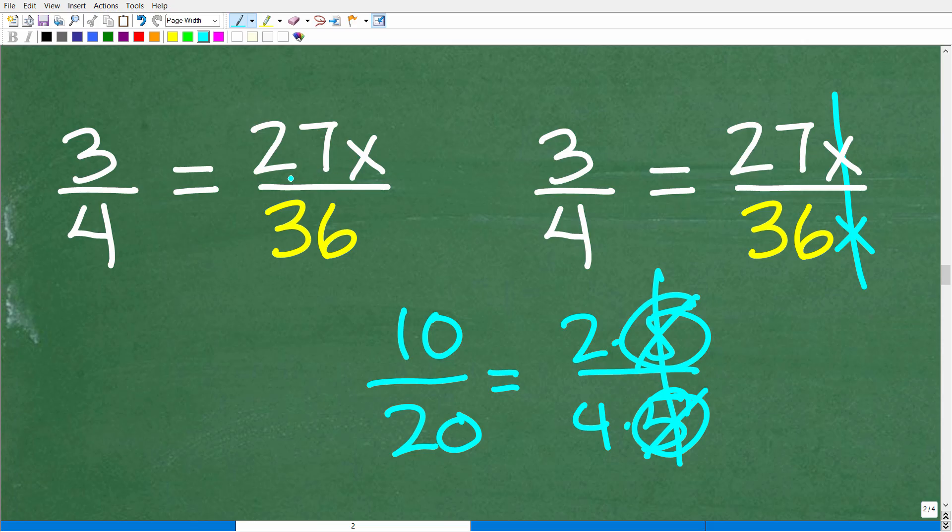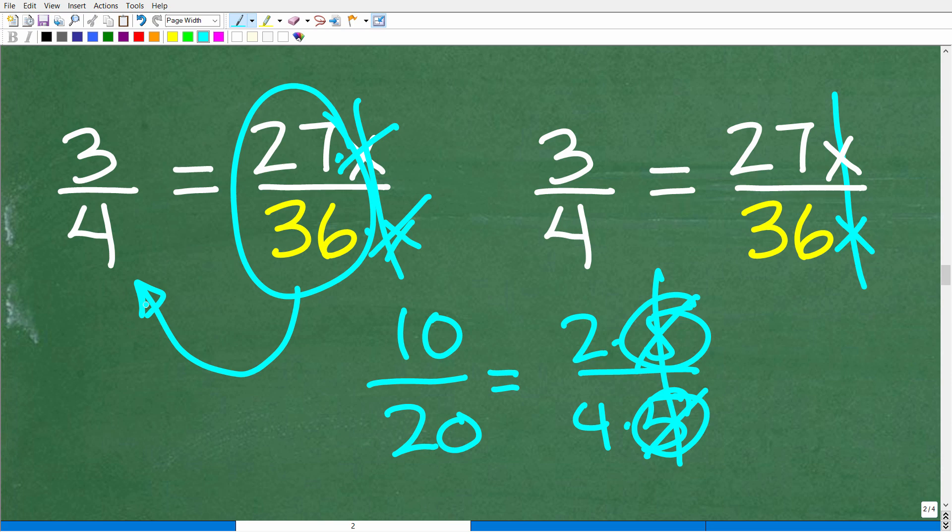Same thing here. This is 27 times x. In algebra, 27x means 27 times x. If we have 36 times x right here, these are like factors. That's what we need to simplify this fraction. 27x over 36x, the x's go away, and 27 over 36 can be reduced down to the fraction 3 fourths. A simple example problem on proportions.